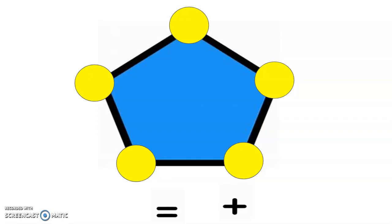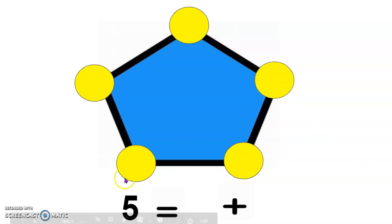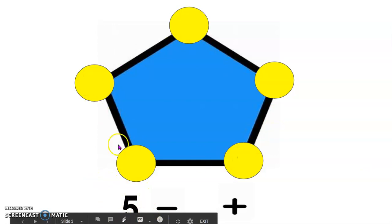How many circles do you see on my pentagon? I see 1, 2, 3, 4, 5 yellow circles on my pentagon. 5. There are 5 yellow circles on my pentagon.